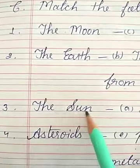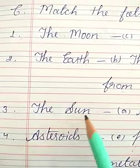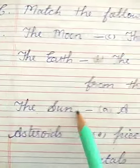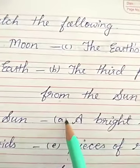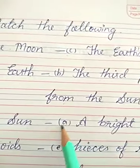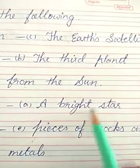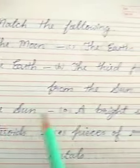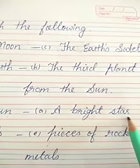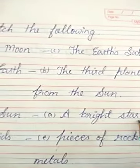Number 3 — The Sun. Option A is correct. The Sun is a bright star. That is the correct matching for the Sun.